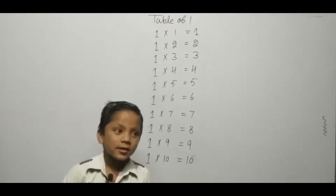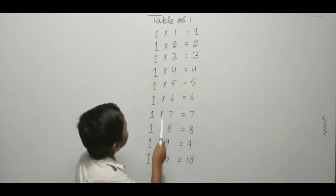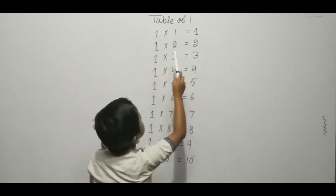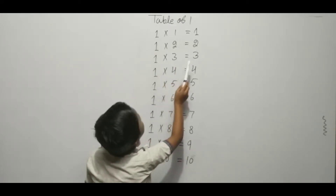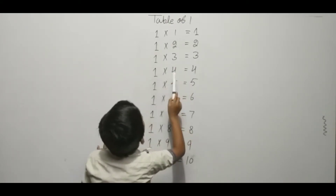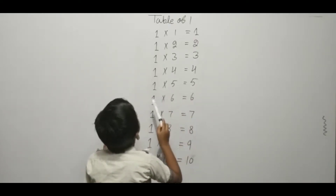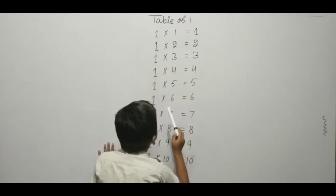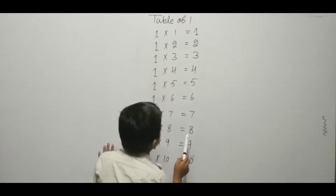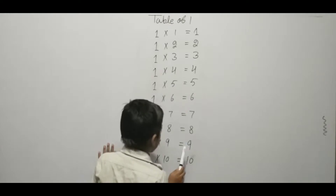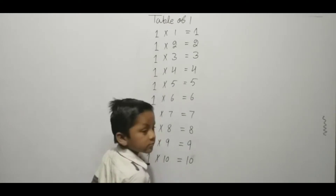Hello friends, we are going to tell a one. One one ja one, one two ja two, one three ja three, one four ja four, one five ja five, one six ja six, one seven ja seven, one eight ja eight, one nine ja nine, one ten ja ten. Thank you.